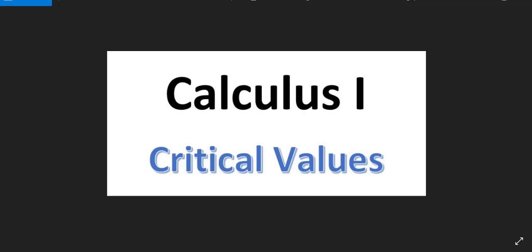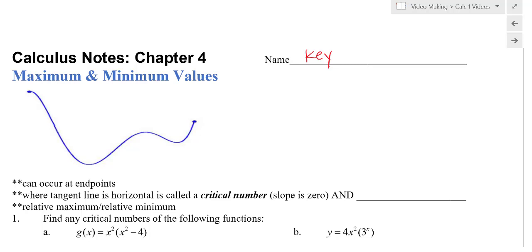Hi, and welcome to a Calculus 1 video on critical values. Let's take a look at this general graph that we have drawn. First of all, it is important to note that we are on a closed interval, so we are looking from x equals a to x equals b. And then the next thing to note is we have a few special points that I'd like to point out.